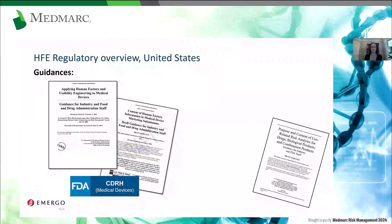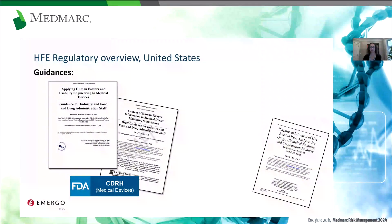Here I'll get started with the regulatory overview for the US. The most pertinent guidance document set forth by CDRH — the Center for Devices and Radiological Health, which regulates medical devices in the US — was published as a final guidance in February 2016. It still represents the FDA's current thinking on human factors. It's a very easy-to-use document — clear, only about 50 pages, with some nice examples. If you have any responsibility for human factors in your role, I highly recommend reviewing this document if you're not already familiar with it.